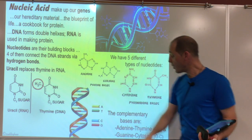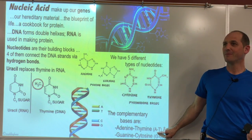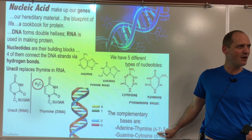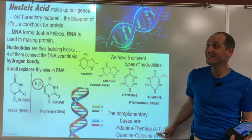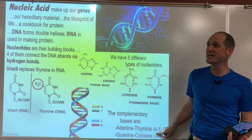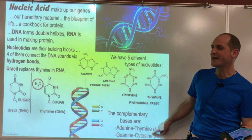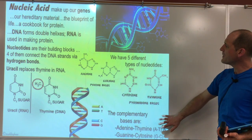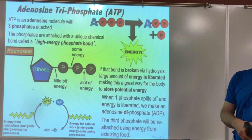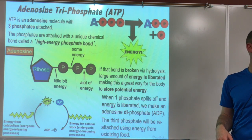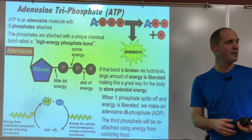A mnemonic for remembering base pairs: A goes with T — 'AT&T,' my non-preferred telephone carrier. And G goes with C — just remember those. We'll go through the nucleotide material more on Wednesday in the cell chapter. Now, last but not least in this chapter, we need to talk about energy.